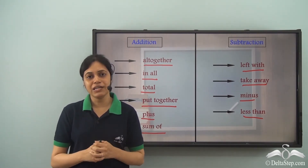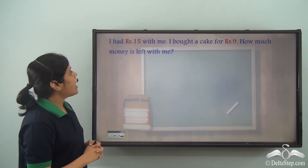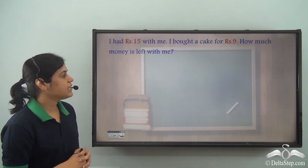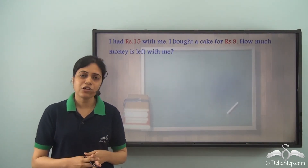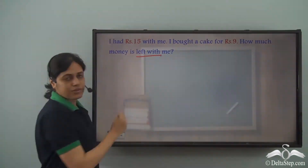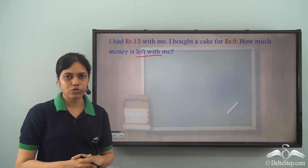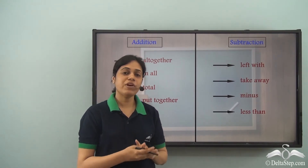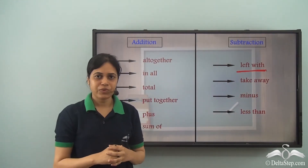Let us see if we can actually find whether we need to add or subtract. This is a word problem: I had rupees 15 with me. I bought a cake for rupees 9. How much money is left with me? We always need to find out how much money we are left with — or how many chocolates, sweets, or toys we are left with. So, left with is what is asked in the word problem. Left with is another name for subtraction — when we need to find what is left with us or someone else, we need to perform subtraction.